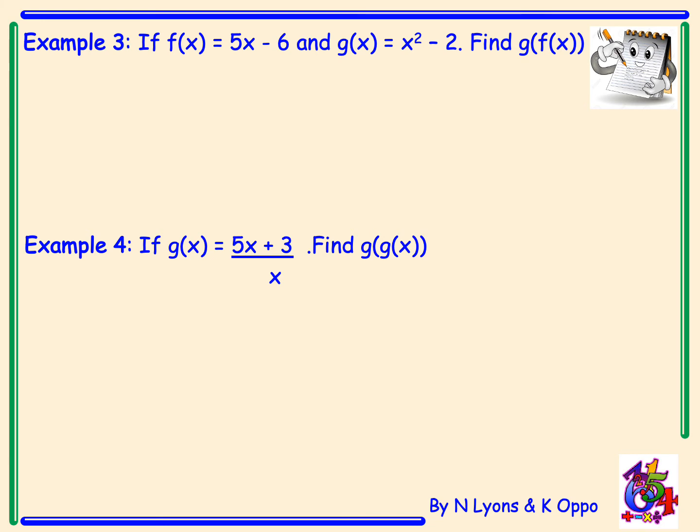Example 3. If f of x equals 5x minus 6 and g of x equals x squared minus 2, this time we're to find g of f of x. So this time we're putting the f function into the g function. First line, we state what we're putting into our g function. So that is going to be 5x minus 6. You then look to your g function to see where x is. And where there is an x, you replace that with 5x minus 6. So I'm replacing my x squared with 5x minus 6 all squared. And then we still have our minus 2 at the end.